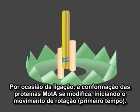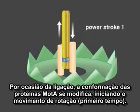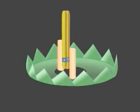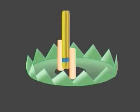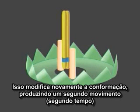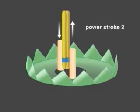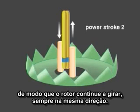This binding causes a conformational change in MotA proteins, resulting in the first power stroke that moves the rotor incrementally. At the end of the first power stroke, the two protons are released into the cytoplasm. The proton loss causes a second conformational change that drives the second power stroke, once again engaging the rotor.